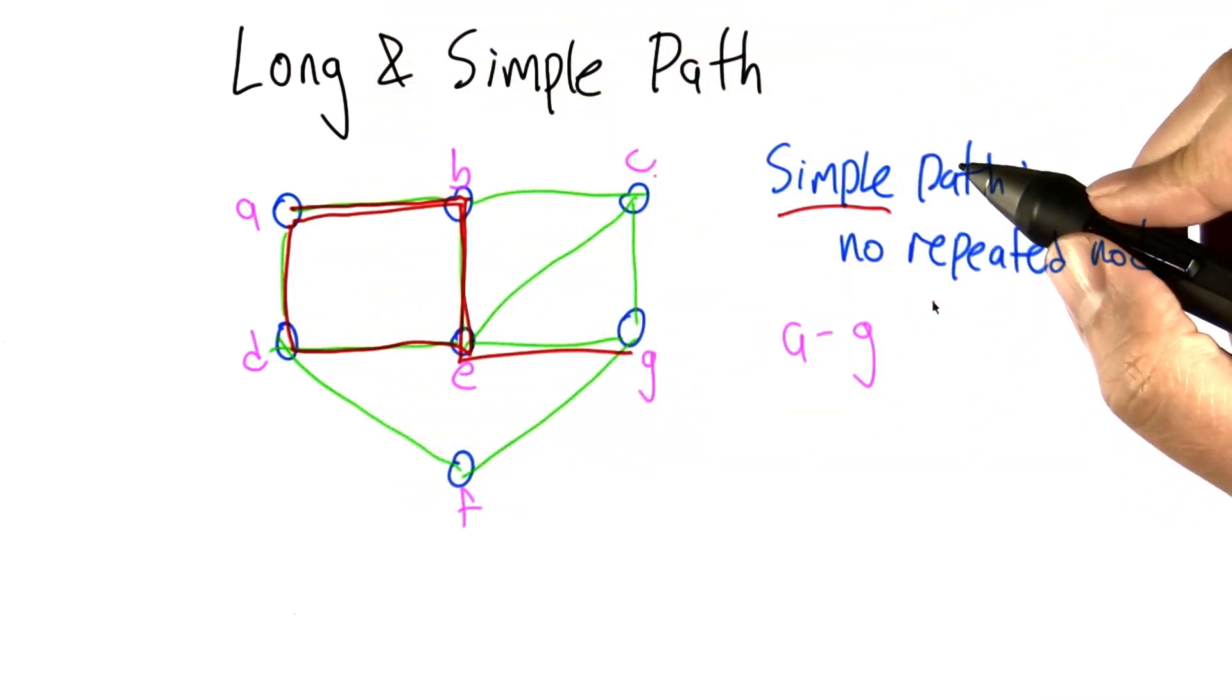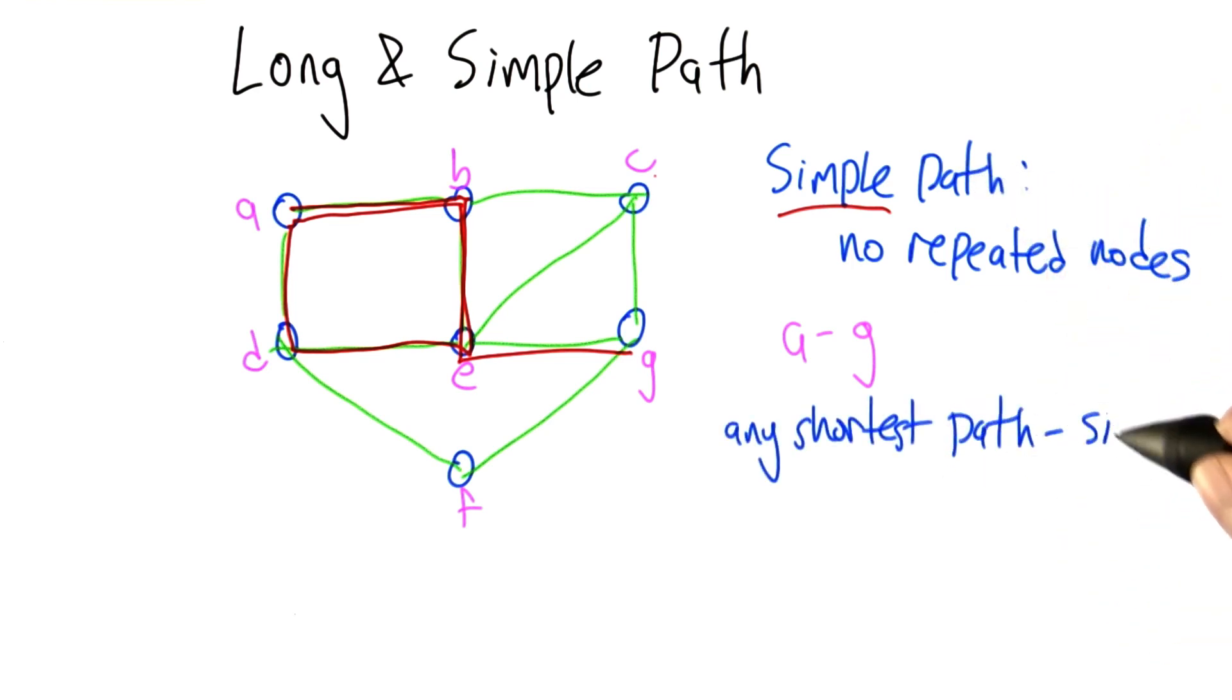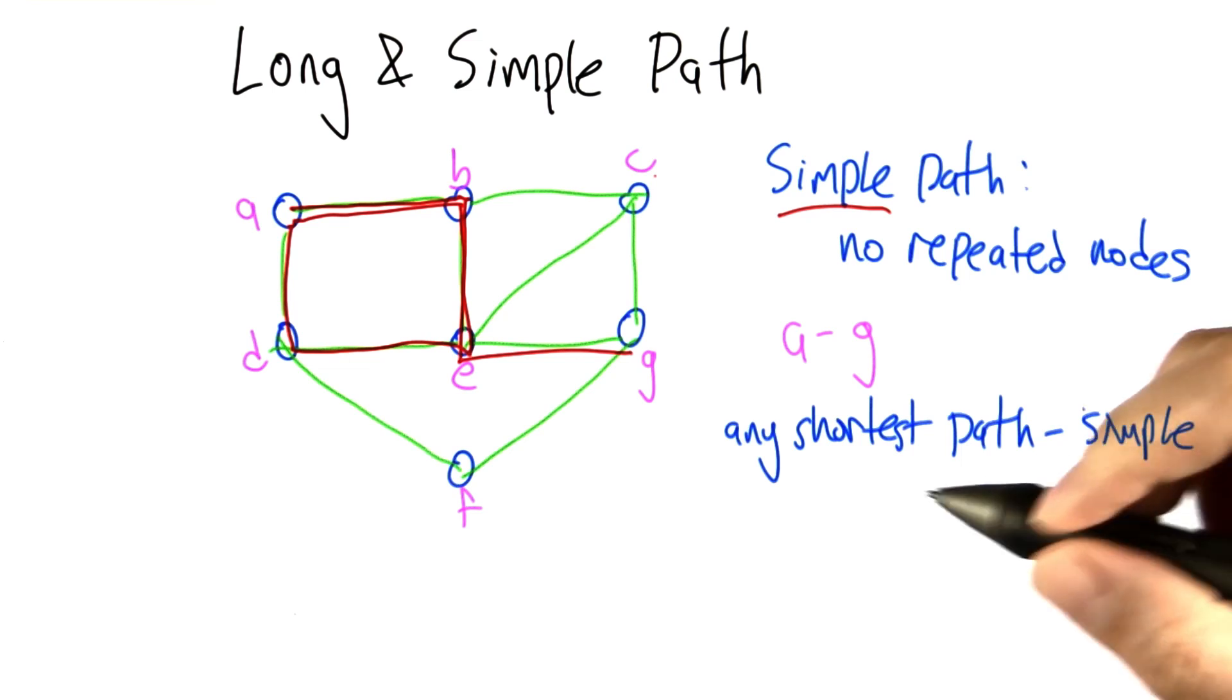So a simple path is not allowed to have any repeated nodes. Any shortest path is going to be a simple path, right? Why?